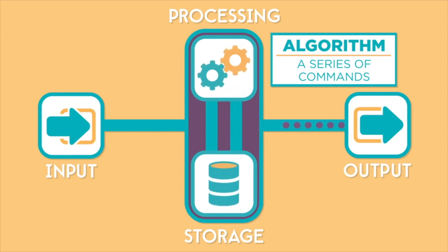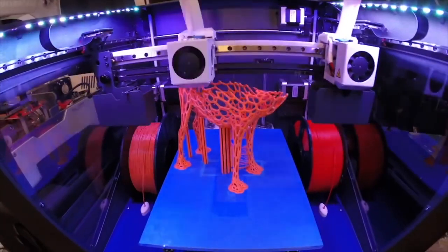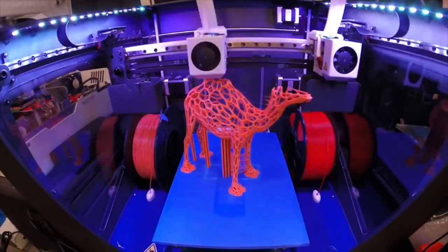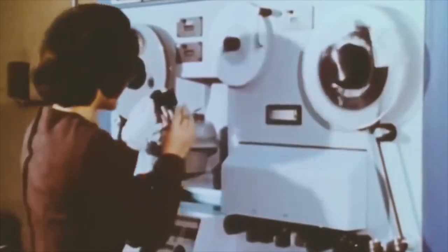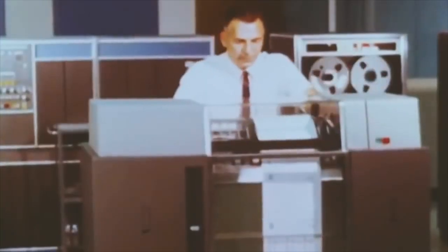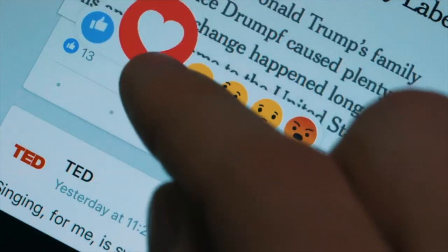The last part is the output. How a computer outputs information depends on what it has been designed to do — maybe a game, maybe VR, maybe AR. And interestingly, when this output goes online, it can also become the input of another computer.